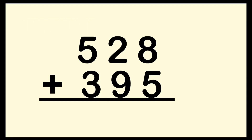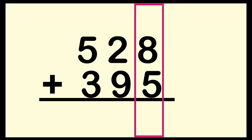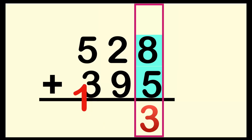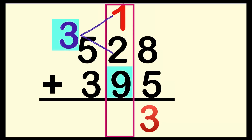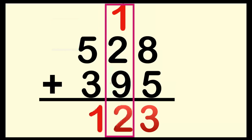Let's proceed now to our second example: 528 plus 395. Again, we're going to start adding at the one's place. 8 plus 5 — put 8 on your mind, big number first: 8, 9, 10, 11, 12, 13. We have 13 here. So again, we cannot put two digits in the one's place. That's why we are going to regroup one to the next place value at the ten's place. 1 plus 2 equals 3. Then 3 plus 9 — put 9 on your mind: 9, 10, 11, 12. We have 12 here. Again, we're going to regroup one to the next place value to the hundred's place.